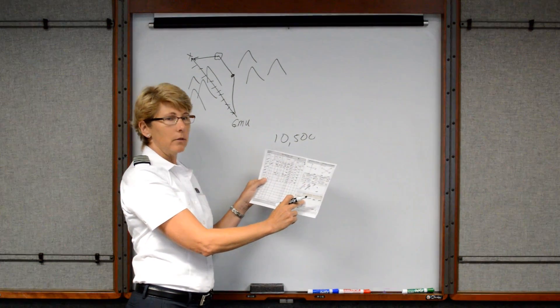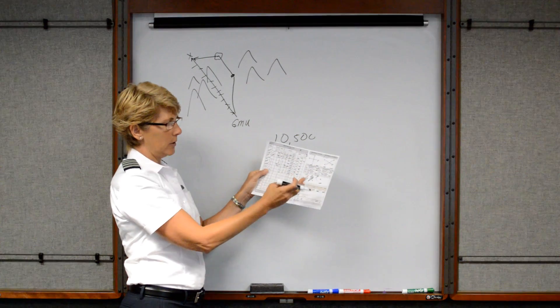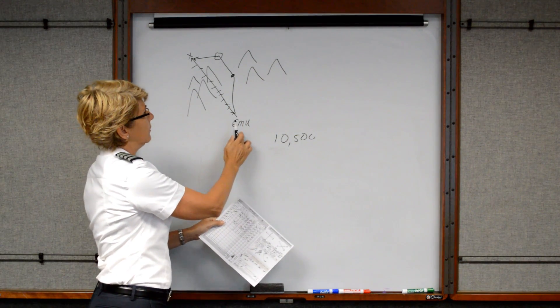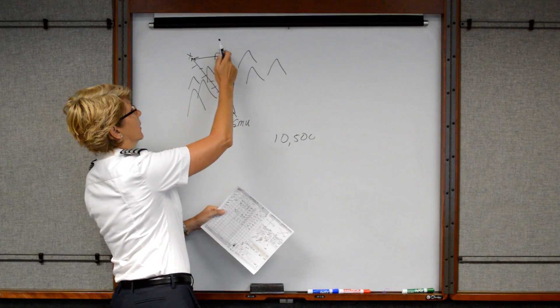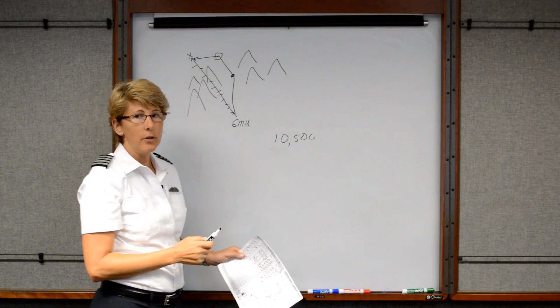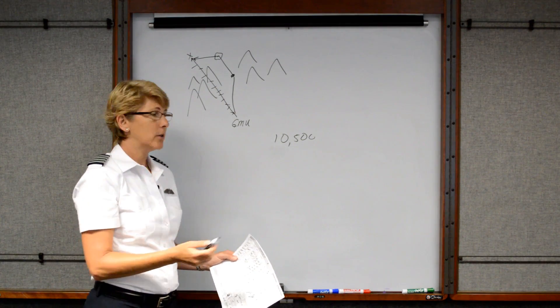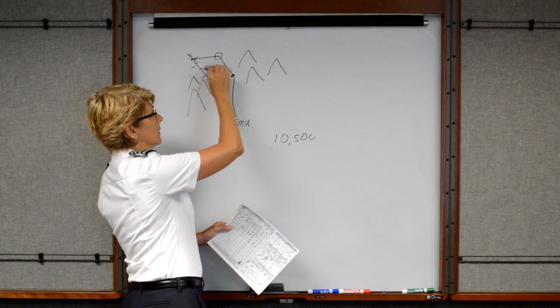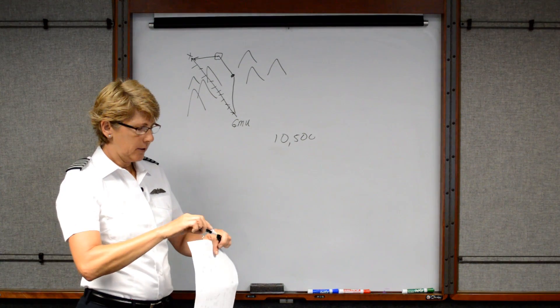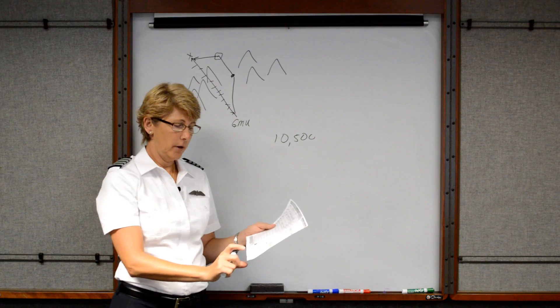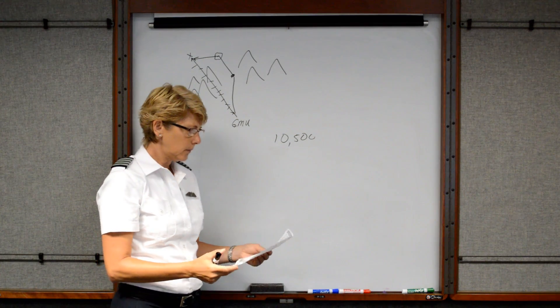But if you had filed a VFR flight plan and opened it, remember we told them our route. In this situation, you would have filed Greenville to Asheville to the VOR and then to your destination. That way, if you didn't show up when you were supposed to and they had to activate search and rescue, they'd have a better idea to know where to look for you. Plus, they would know to look for a white aircraft and they would know to look for three souls.